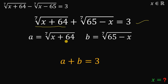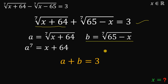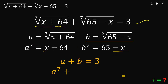Raising both sides by 7, we get a⁷ = x + 64 and b⁷ = 65 - x. Notice we have positive x and negative x, so when we add a⁷ and b⁷, the x cancels, giving us a⁷ + b⁷ = 64 + 65 = 129.